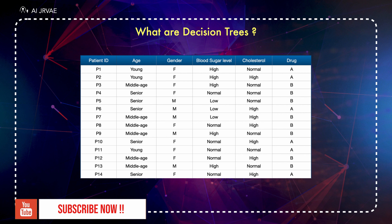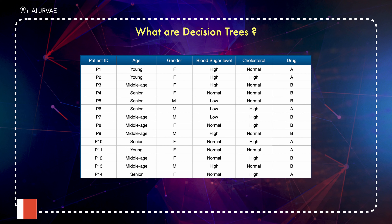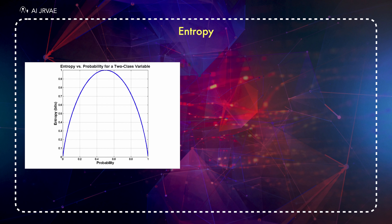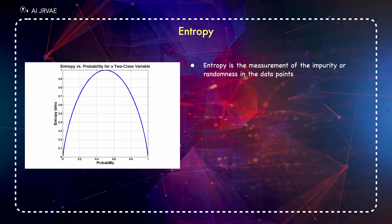Before building the decision tree, let's have a look at the two popular attribute selection measures required for building a decision tree. What is Entropy? In layman's words, it is nothing but a measure of disorder or measure of purity. Basically, it is a measurement of the impurity or randomness in the data points.